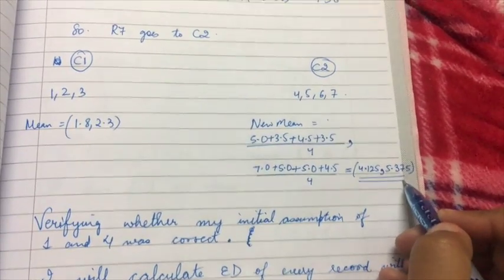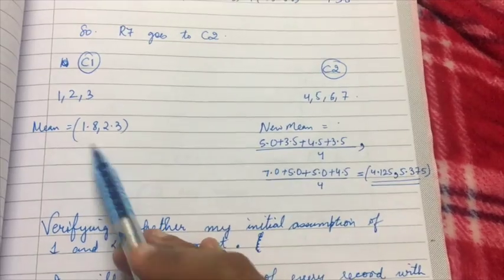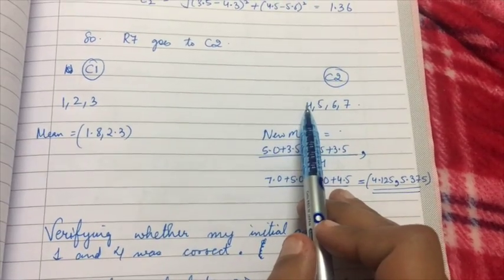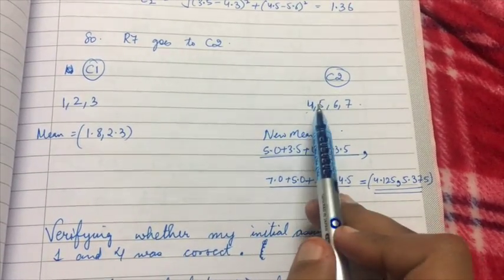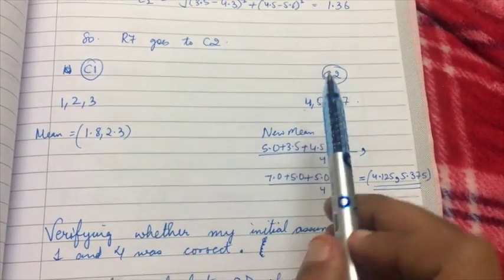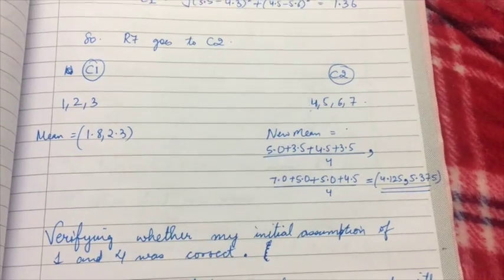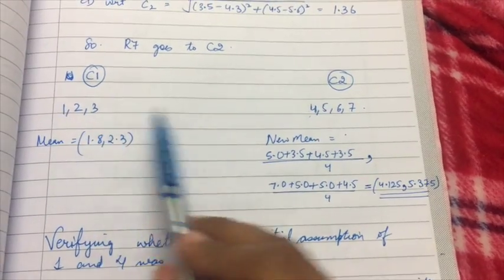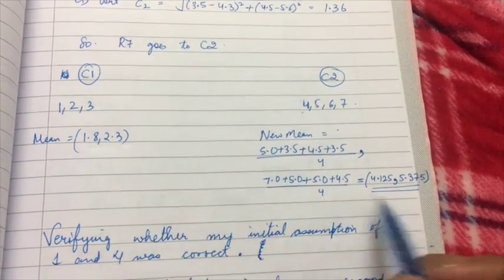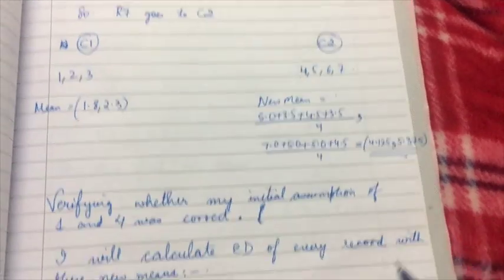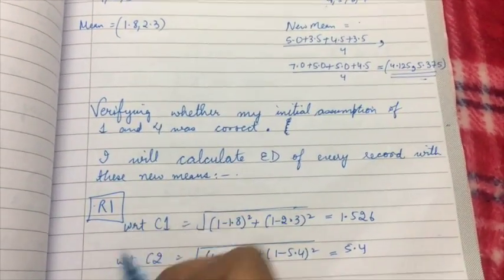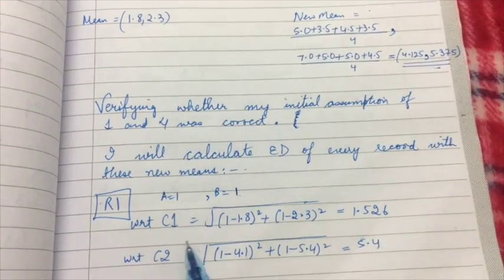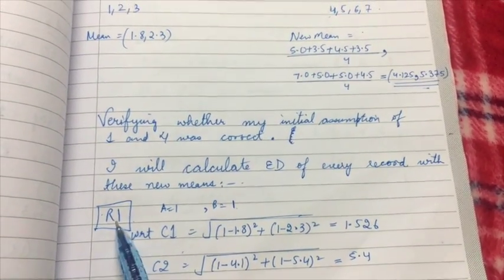Now I calculate the new means for both clusters. In the beginning I had only assumed that item one goes in cluster one and item four in cluster two — there was no certainty my assumption was correct. To verify, I need to find the Euclidean distance of all records — one through seven — with respect to these new means. For record one, the value of a was 1 and b was also 1.